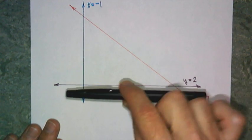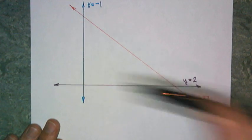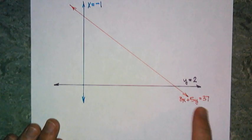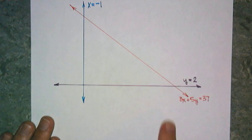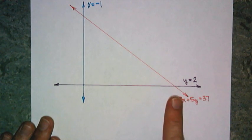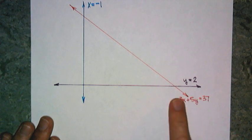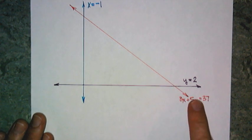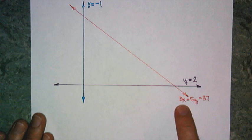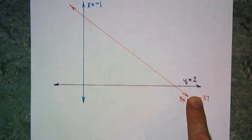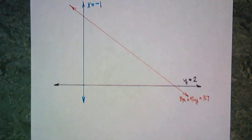y equals 2 is a horizontal line, and 3x plus 5y is a line with a negative slope, because if I put in 0 for x, I would get y to be greater than 7, and then if I put 0 in for y, I get x to be something like 12 or something bigger, right? So, that'd be kind of negative.